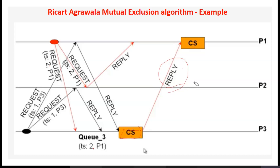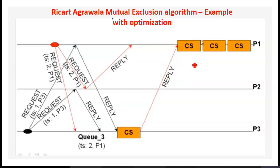On receiving the reply message from P3, P1 understands that P3 has completed its CS execution. So the next highest priority belongs to P1, and it immediately enters the critical section.